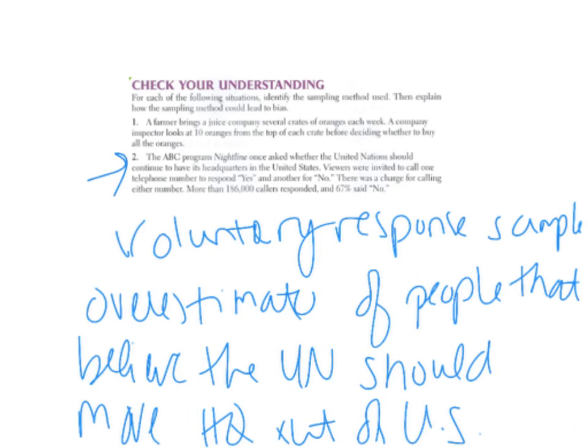We'll be looking at more examples like that. You'll be working on a project that will incorporate bias, and we'll be talking about other ways that bias can occur as we go through this chapter on designing our studies.